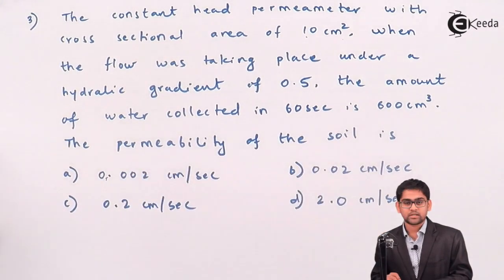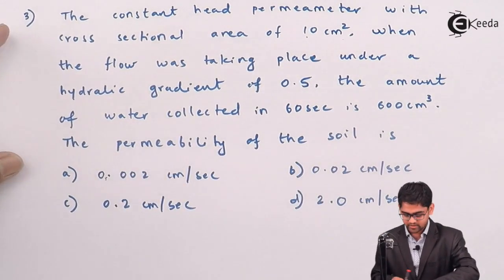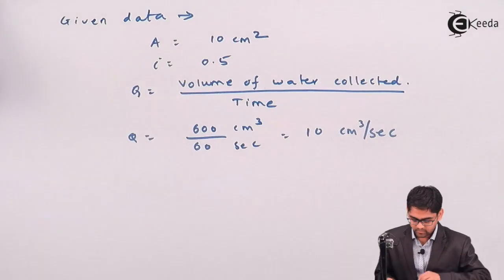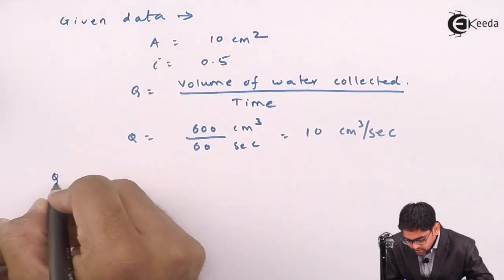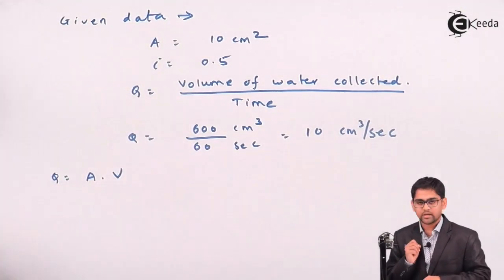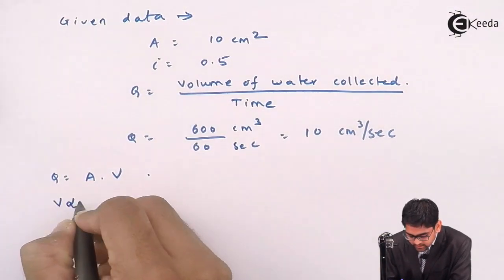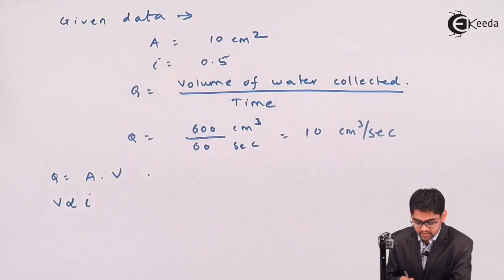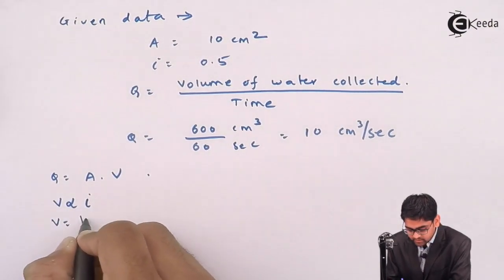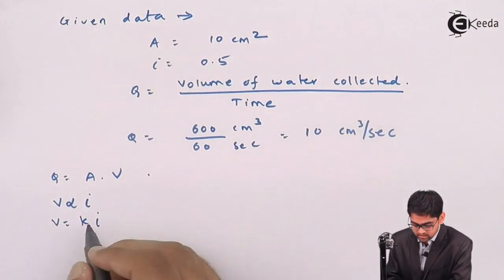And they have asked us to calculate the K value that is coefficient of permeability. So basic Q is nothing but area into velocity. From the Darcy's law, velocity is directly proportional to hydraulic gradient I, V becomes equal to K into I.